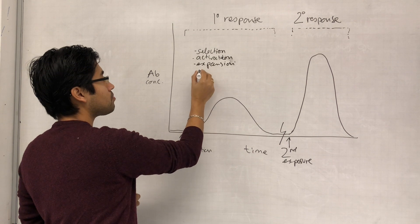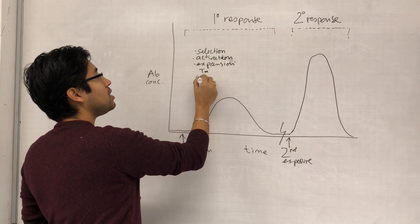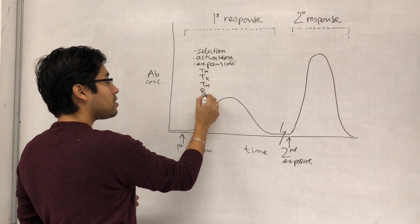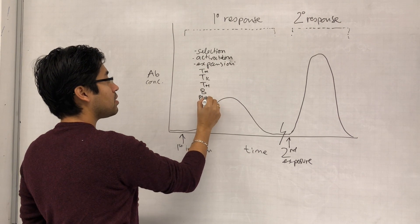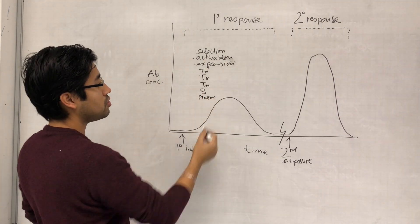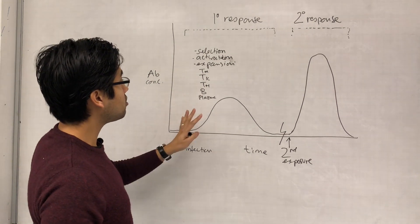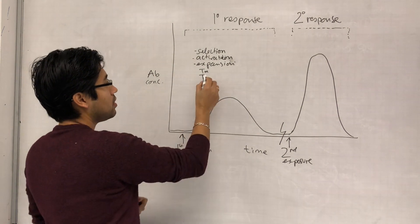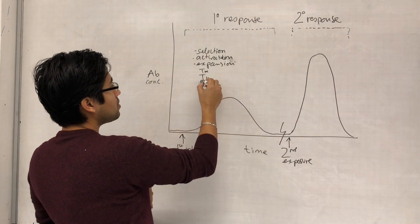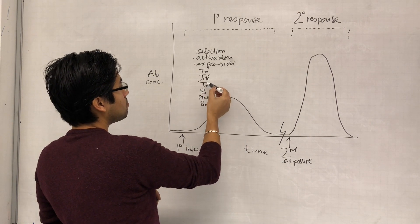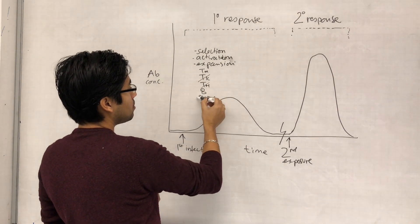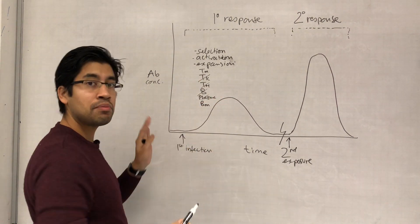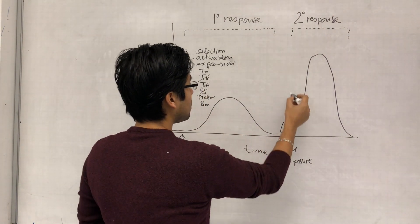We need to generate T memory cells, T killer cells, more T helper cells, and activate B cells to produce plasma cells that will make the antibody, as well as producing B memory cells. After the primary response, the T killers disappear, the T helpers disappear, and the plasma cells all go away. But we will still have T memory cells and B memory cells - they are still around.